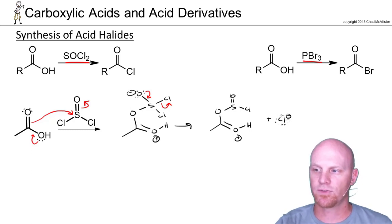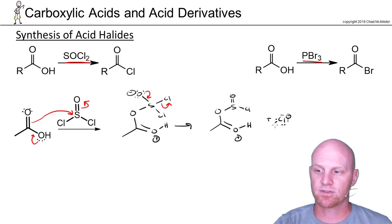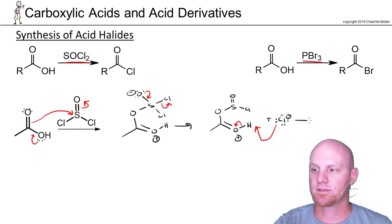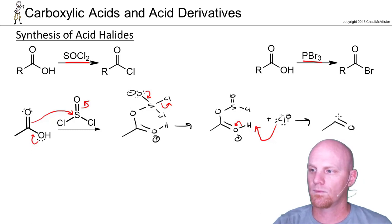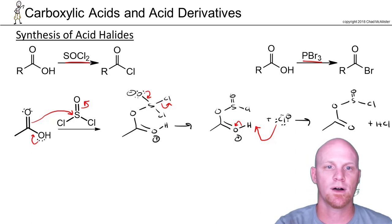This reaction also produces a chloride ion, so we're going to need one later on and there should be chloride ions in solution when we need them. In this case, the chloride is going to act as a base and come and deprotonate — it's not the greatest base in the world, but it's going to have to work. We form a little HCl as well.